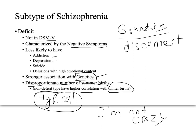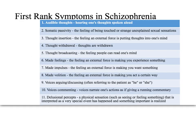Here are the first-rank symptoms of schizophrenia. When I first realized something was wrong with my brother, he approached me and said he knew what I was thinking — that some people can tell what others are thinking and wanted to know if I could hear his thoughts. These are first-rank symptoms and are important in the diagnostic algorithm for schizophrenia.